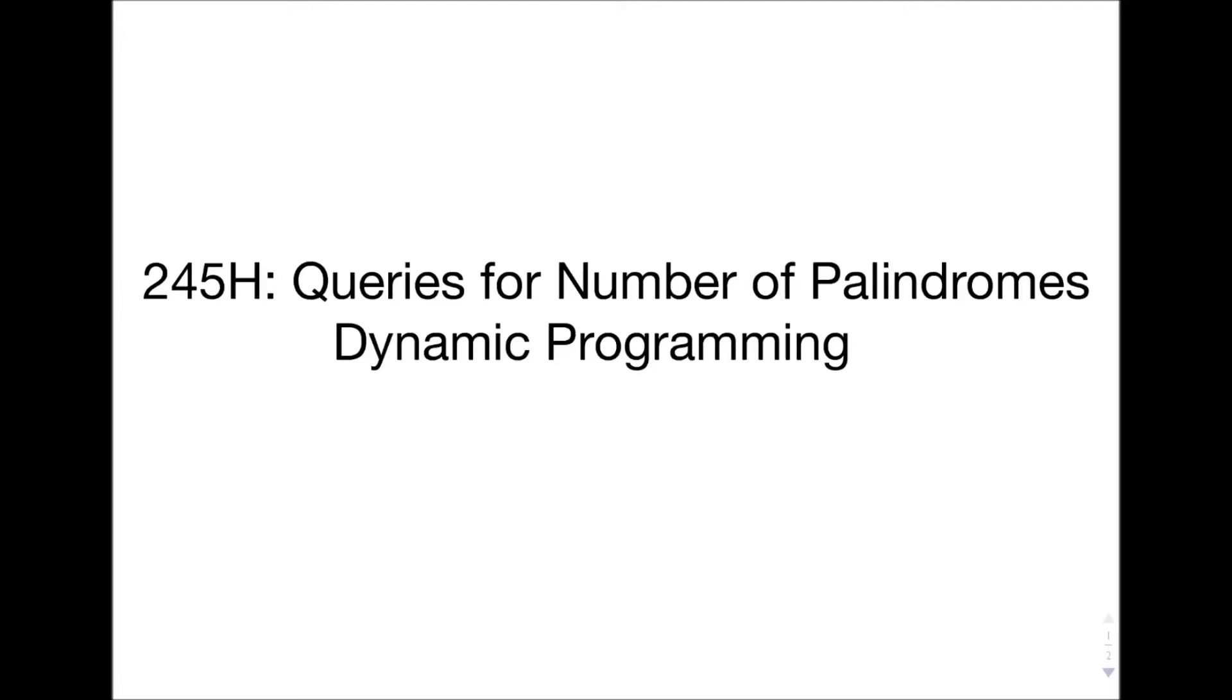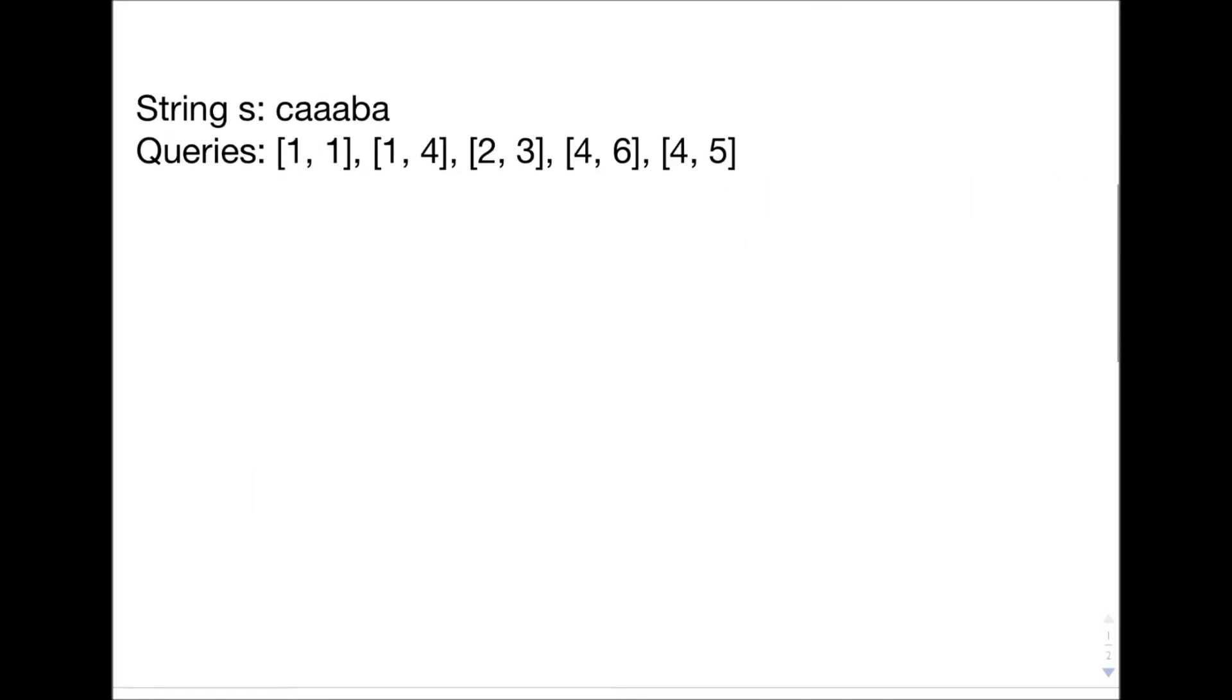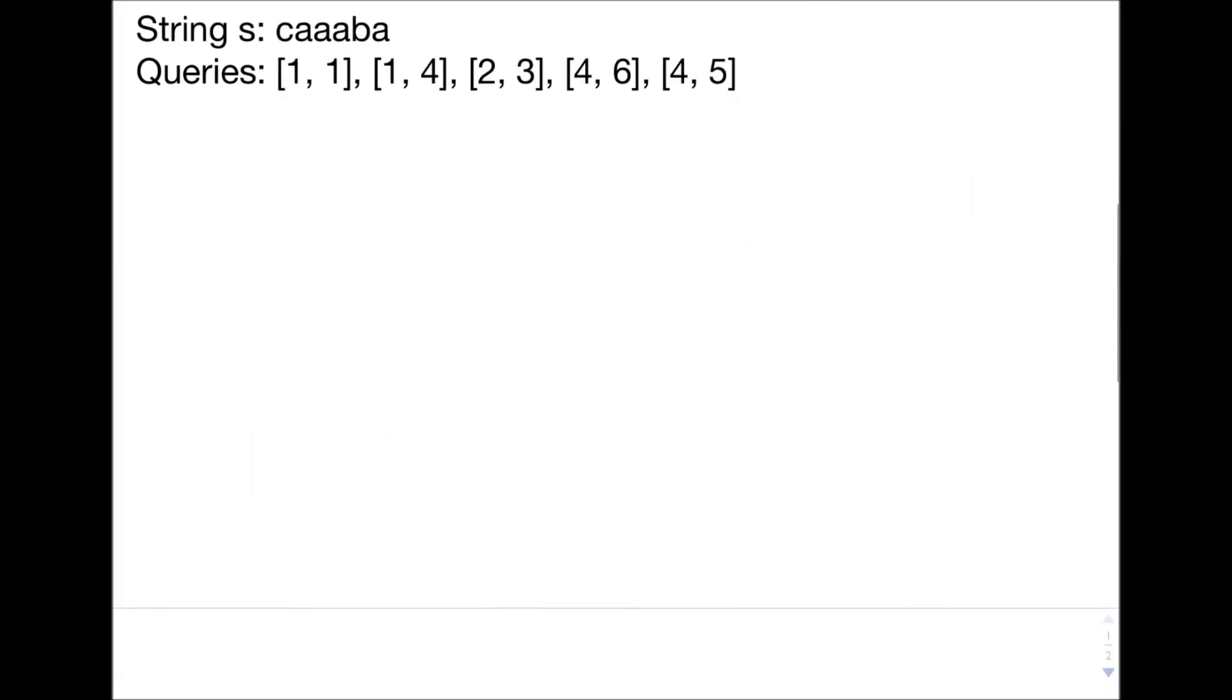Let's consider the problem 245H: Queries for a number of palindromes, which is pretty self-explanatory. We're going to solve this using dynamic programming. The problem is as follows: you have a string, which in the sample input is CAABA, and then you have several queries. In each query, you have to output the number of palindromes in that range.